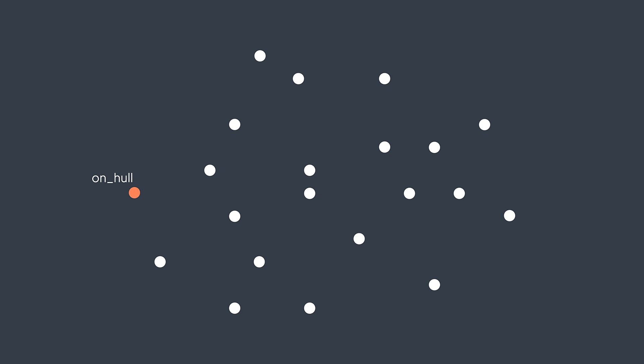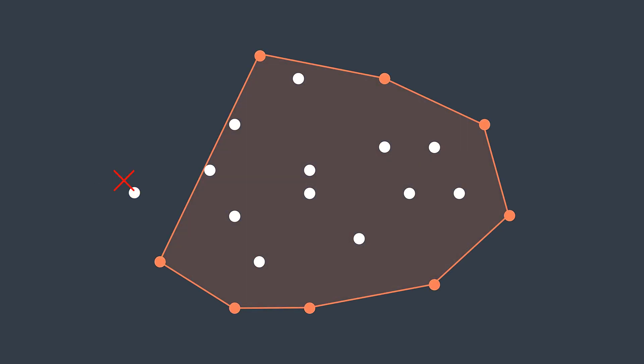In this algorithm, we will find the first point of the hull, then the second one, then the third one, and so on until we close the convex hull by finding the first point again. The first point is the one that is as far left as possible, because if we don't put it in the hull, there will be no other point before it to extend the convex hull enough to contain it.